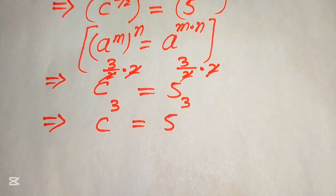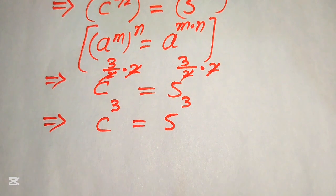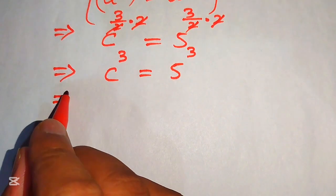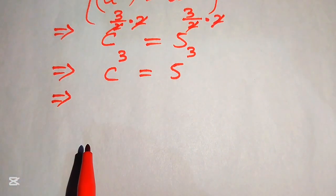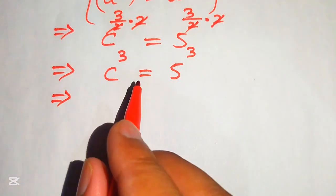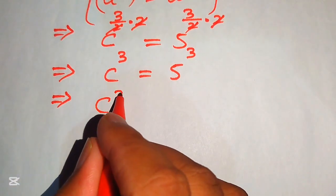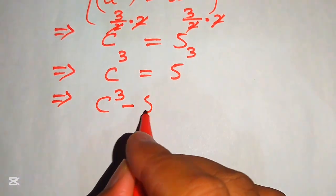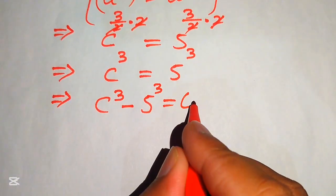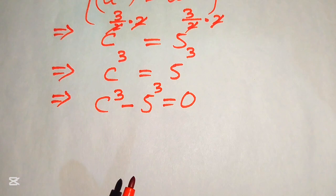After this simplification, our given equation becomes a cubic form. Now we will apply the cubic formula to solve for the values of c. We move 5 cubed from the right-hand side to the left-hand side, and it becomes c cubed minus 5 cubed equals to 0.